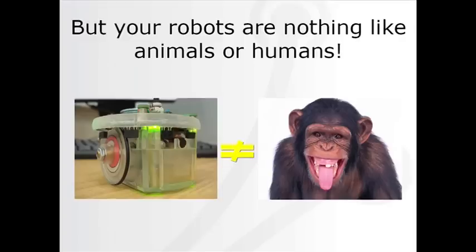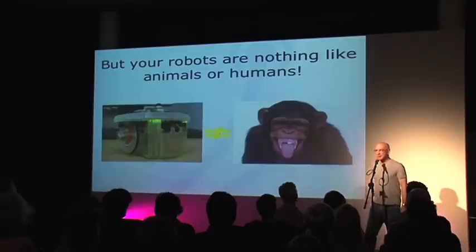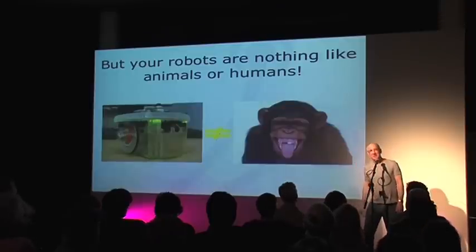I hear you say: robots are nothing like animals or humans. But, in fact, there are two important similarities. Robots have bodies, just like animals, and they have to learn socially in exactly the same way.